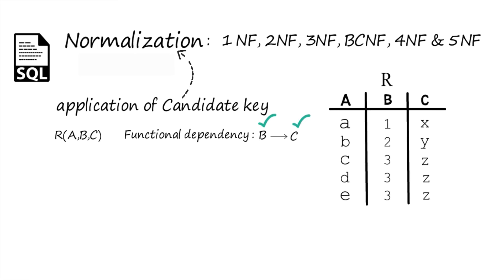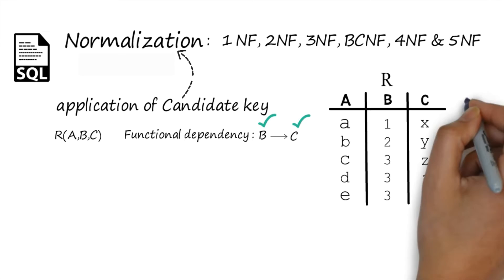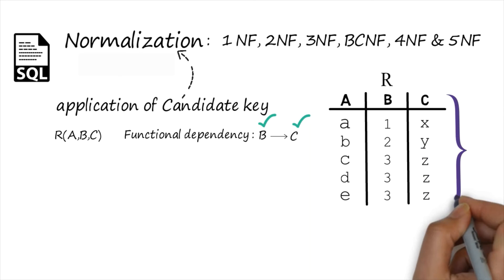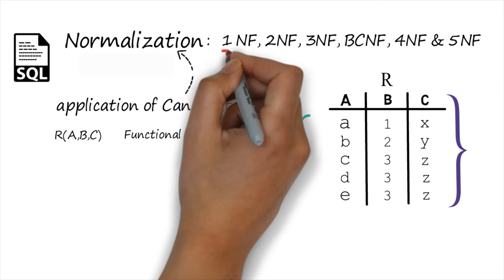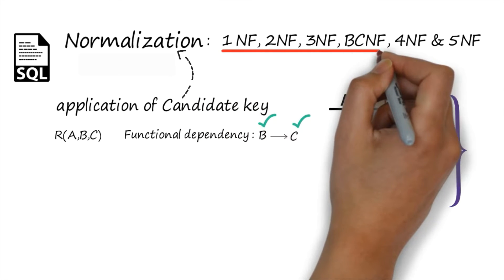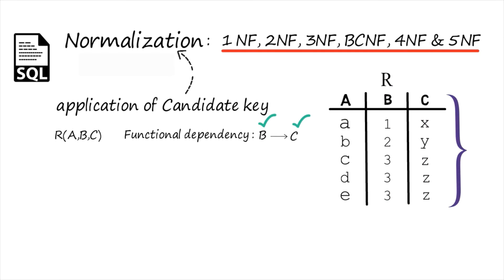One functional dependency is given: B → C. This means if I have the value of B, I can search for the value of C. At this point, the question is whether creating this table is beneficial — is it normalized? We have to check whether this particular table belongs to any of the normal forms. If it belongs to a normal form, it is fine. When talking about third normal form, I am assuming my table already satisfies first and second normal form.